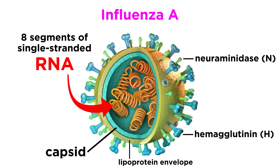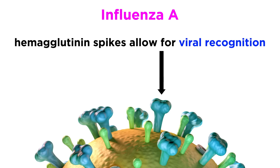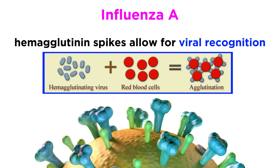The two glycoproteins that make up the spikes of the envelope are called hemagglutinin, abbreviated with the letter H, and neuraminidase, abbreviated with the letter N. The spikes are an important part of the virus's ability to cause damage. The hemagglutinin spikes allow the virus to recognize and then attach to specific receptors on host epithelial cells. Viruses that have these hemagglutinin spikes also cause red blood cells to stick together, which is called hemagglutination, and this is one method for identifying if a virus is present.